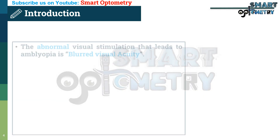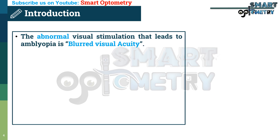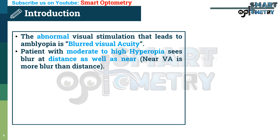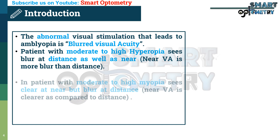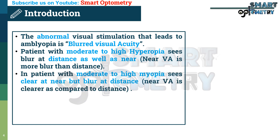The abnormal visual stimulation that leads to amblyopia is blurred visual acuity. A patient with moderate to high hyperopia sees blur at distance as well as near, and near visual acuity is more blurred than distance in a hyperopic patient. A patient with moderate to high myopia sees clearly at near but blurred at distance, and near visual acuity is clearer compared to distance in a myopic patient.